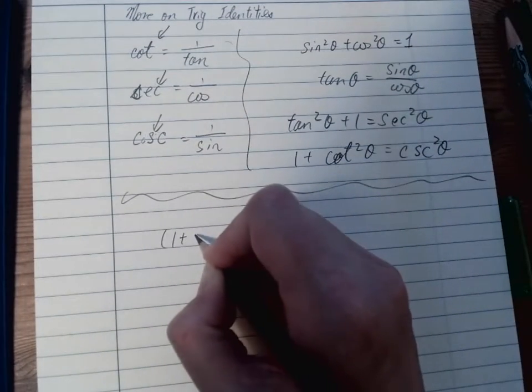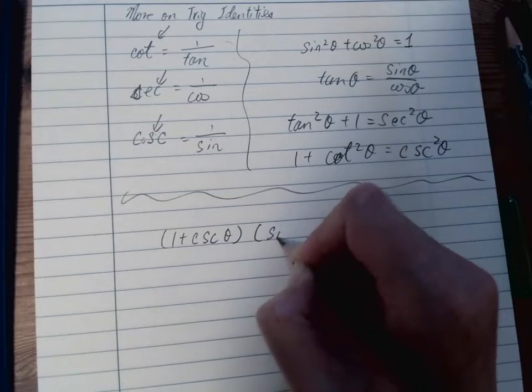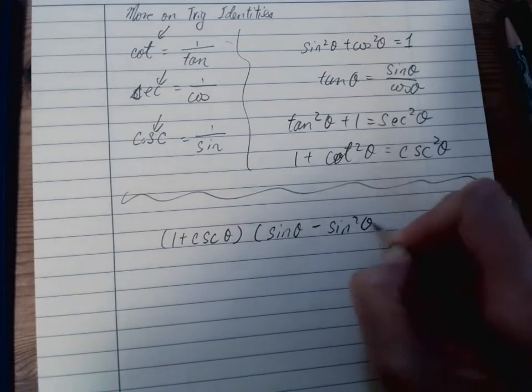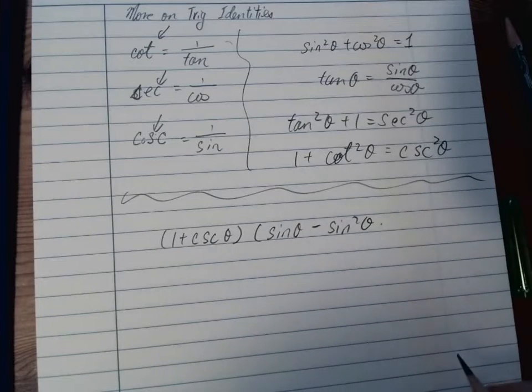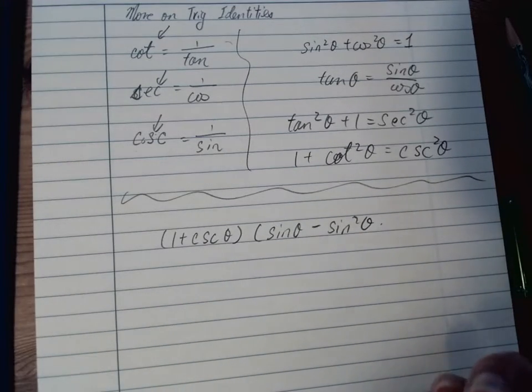So for example, we need to simplify 1 plus cosecant times sin theta minus sin squared theta. So all you need to do is just get through those and expand it.